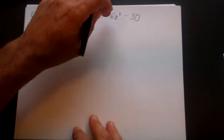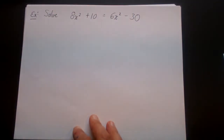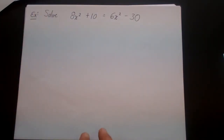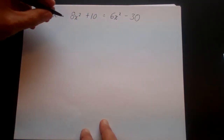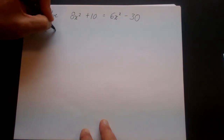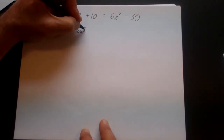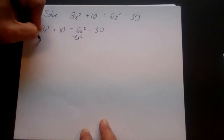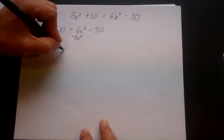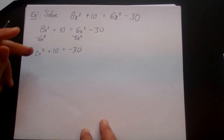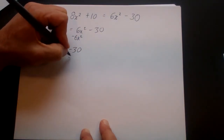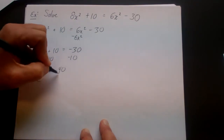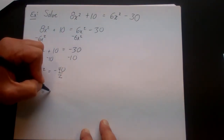Let's look at another example: solve 8x squared plus 10x equals 6x squared minus 30. Let's check if this is a square footer problem. Wait — it actually has two x squared terms but no x term, so it is. I'll isolate the x squared by subtracting 6x squared from both sides to get 2x squared plus 10 equals negative 30. Then I subtract 10 from both sides to get 2x squared equals negative 40, and divide by 2 to get x squared equals negative 20.